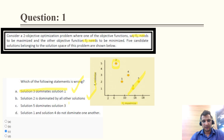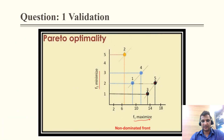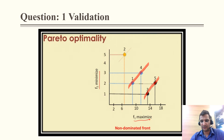The wrong statement is option C. The last statement — Solution 1 and Solution 4 do not dominate one another — is absolutely correct, since 1 and 4 lie on the same line and therefore cannot dominate each other. Similarly, 3 and 5 lie on the same line, but option C incorrectly states that 3 dominates 5, so that was the incorrect statement.